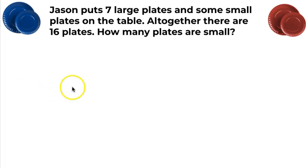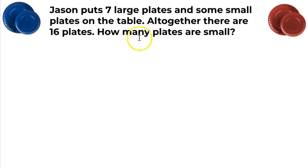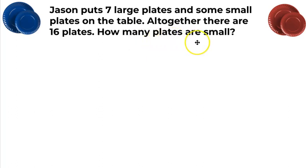Now I'm going to ask myself, what information am I given? Well, I'm given seven large plates, which is a part, and some small plates, because if I put those together, I'm going to get 16 plates all together. This sum is telling me I don't know the other part — I don't know how many small plates there are. And the question is asking me, how many plates are small?